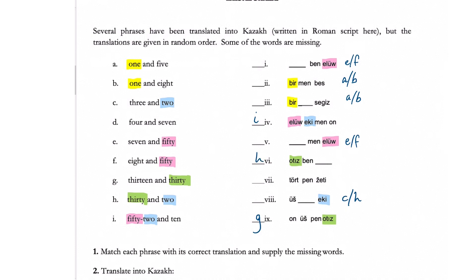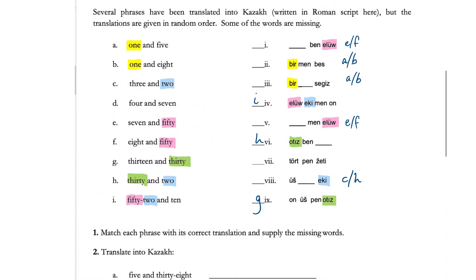This solves our mystery for g and h, and it also confirms that the two words mean 13. Because we already know what 'two' is, we can easily figure out the blank for h, which matches with six. So for that blank, it will be the word for 'two'.